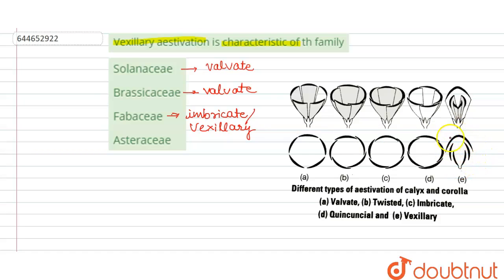right. So this is the kind of aestivation which is seen in the Fabaceae. Apart from it, this kind, that is the imbricate type, is also seen in the Fabaceae family. Coming to the next one, that is the Asteraceae family.